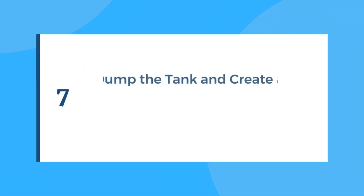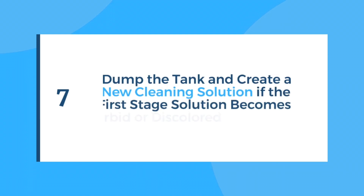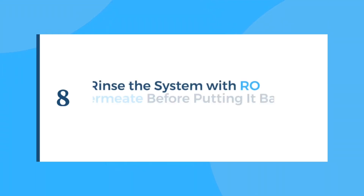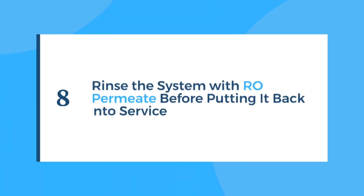Step 7: To avoid redeposition of removed materials, the first return flow — up to 15% of the cleaning tank volume — should be routed to drain in cases of high fouling. In a multi-stage system, every stage must be cleaned independently for better performance. Step 8: Dump the tank and create a new cleaning solution if the first stage cleaning solution becomes turbid or discolored. If the pH or temperature deviates from the prescribed range, a new solution should be made. In any case, for each stage a new cleaning solution should be created.